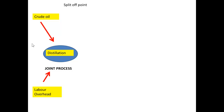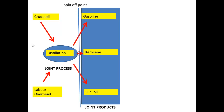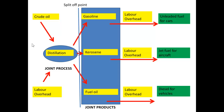To recap: up to the split-off point, you have a joint process involving costs for crude oil (material cost) and labour cost. From the crude oil you get three joint products — gasoline, kerosene, and fuel oil — and you can further process those to get, for example, unleaded fuel for cars, jet fuel for aircraft, and diesel for vehicles.